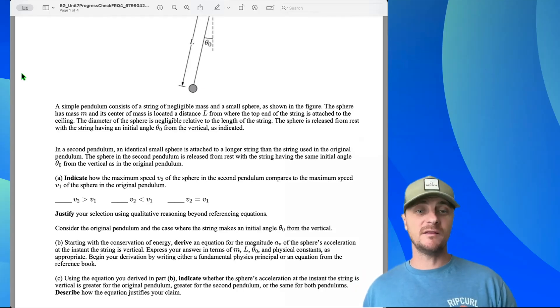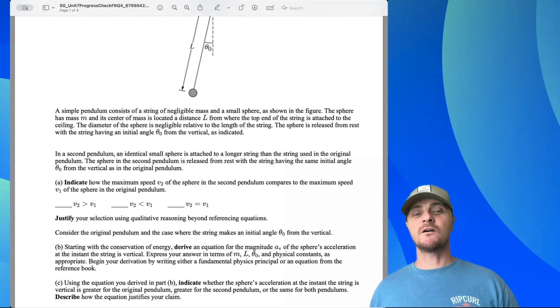Consider the original pendulum and the case where the string makes an initial angle theta naught from the vertical. Part b: Starting with the conservation of energy, derive an equation for the magnitude a sub v of the sphere's acceleration at the instant the string is vertical. Express your answer in terms of m, l, theta naught, and physical constants as appropriate. Begin your derivation by either writing a fundamental physics principle or an equation from the reference book.